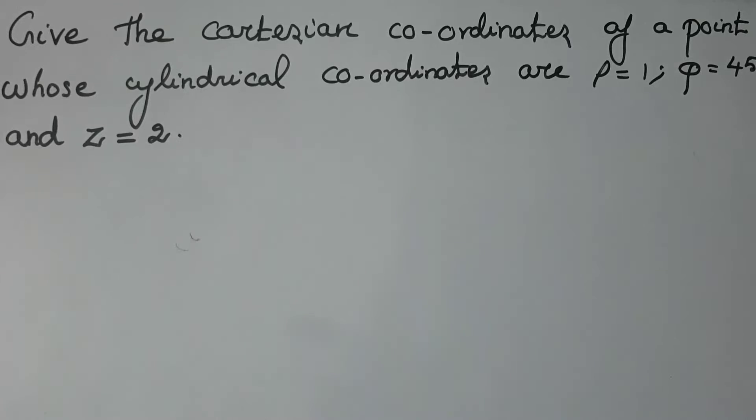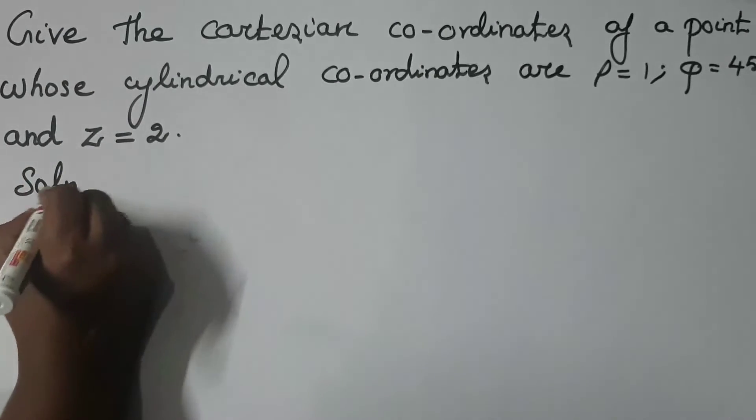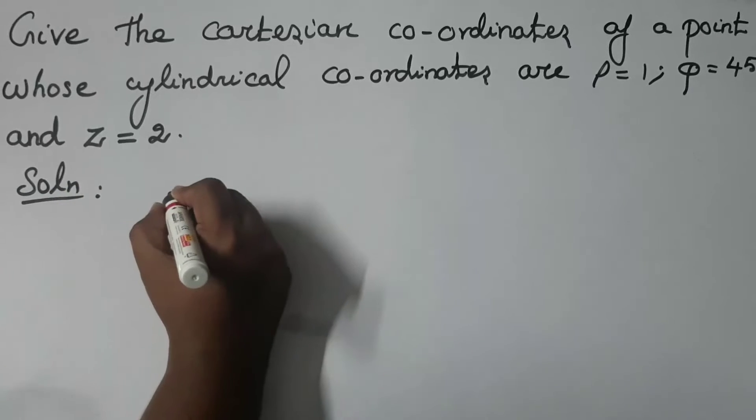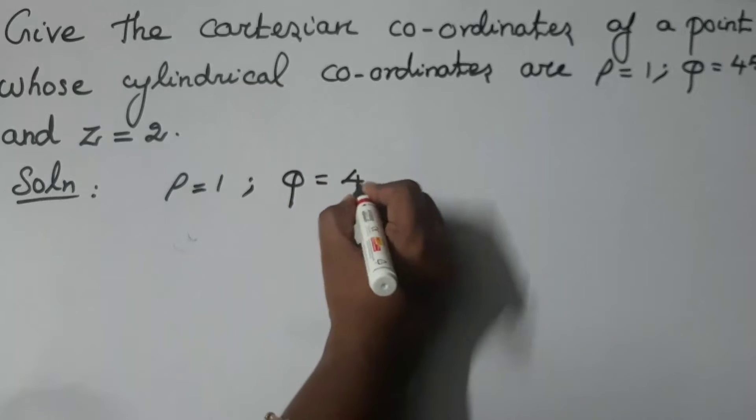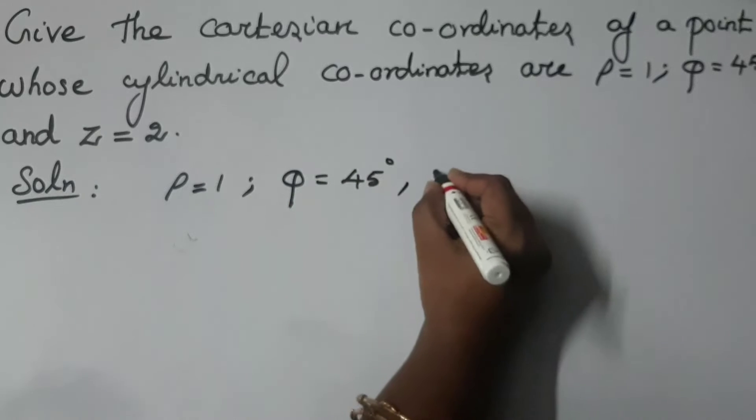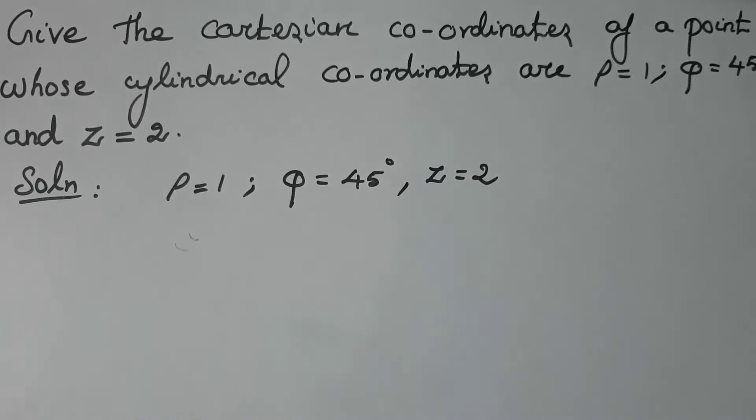First, write the cylindrical coordinate points. So ρ value is equal to 1, φ value is equal to 45 degrees, and z value is equal to 2. So these are the given data.